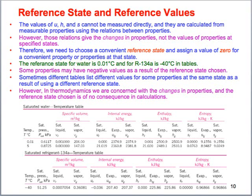The reference state we're going to be using for water is 0.01 degrees Celsius, and for refrigerant 134a it's going to be minus 40 degrees Celsius. You may see some negative properties based on this reference state, but don't pay attention to that necessarily.